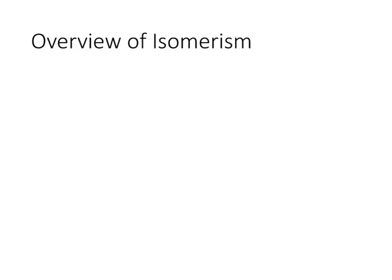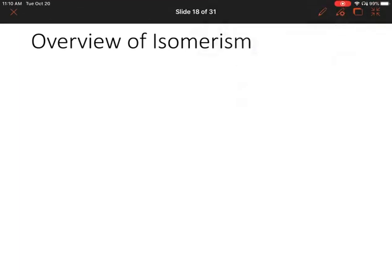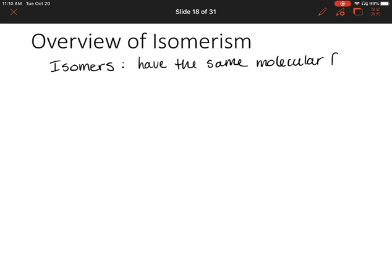Hi everyone. Today we're going to start the second half of Chapter 5, and we're going to start by going through an overview of isomerism. Remember from a while ago, we talked about isomers, and we said that isomers have the same molecular formula but they might have slight differences. And there are several different types of isomers, so let's make a flowchart for the different types of isomers.